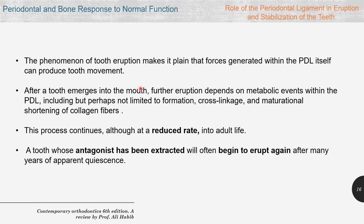During eruption of teeth, the PDL applies pressure on the teeth to move them out of the socket. After a tooth emerges into the mouth, further eruption depends on metabolic events within the PDL, including the formation, cross-linkage, and maturation and shortening of collagen fibers within the PDL. This process continues even in adult life at a reduced rate — if a tooth is extracted, we expect the opposing tooth to continue erupting even after many years.